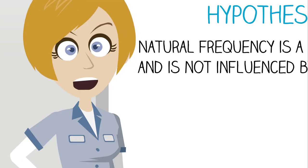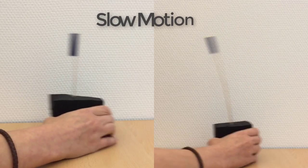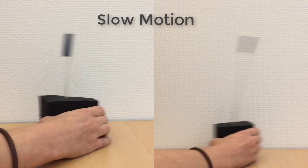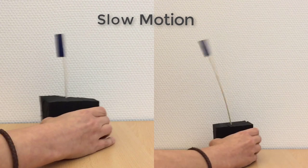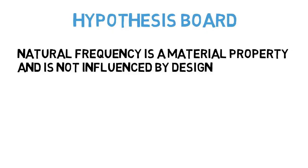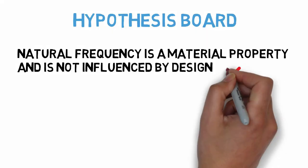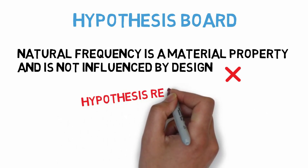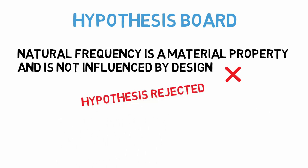So now, what can we learn from our experiment? Based on our hypothesis, our oscillating structures should have behaved in the same way, but they didn't. What we saw was that there was a clear difference between the short skewer setup and the long skewer setup. Therefore, we can say that our hypothesis has been disproved, and that resonance is indeed influenced by structural design. But what does this mean in the greater engineering sense?